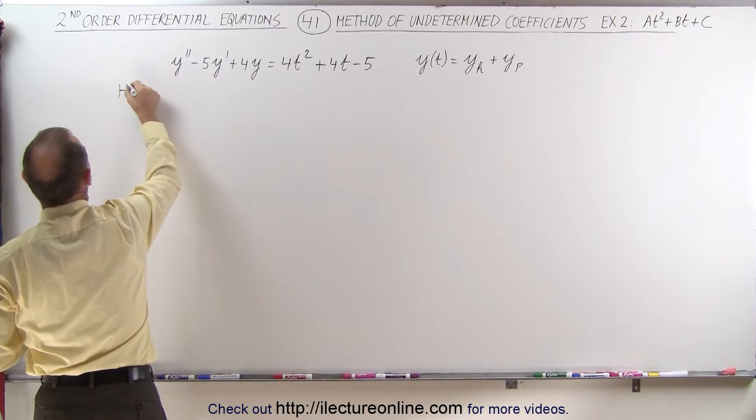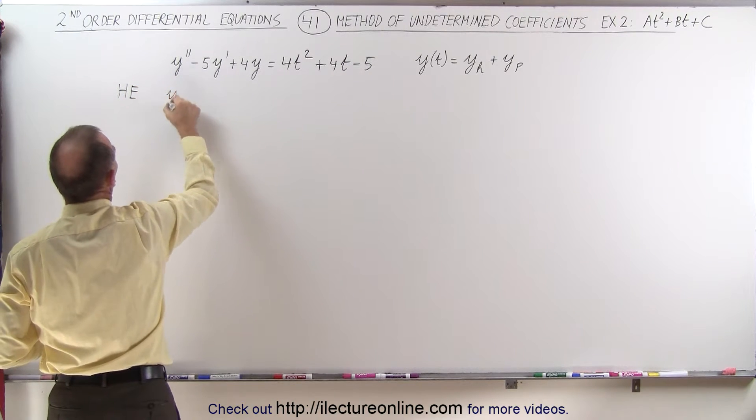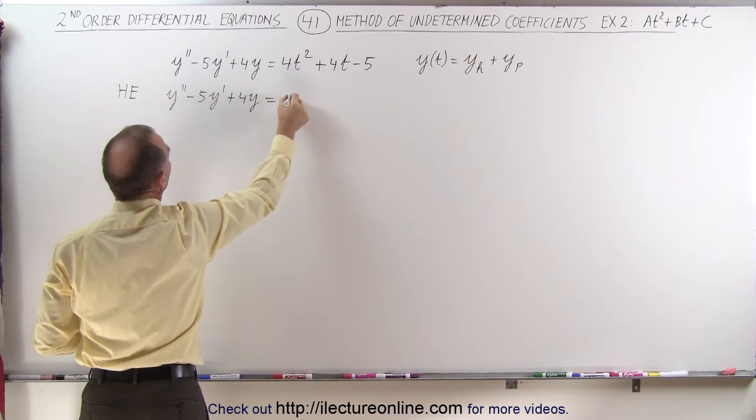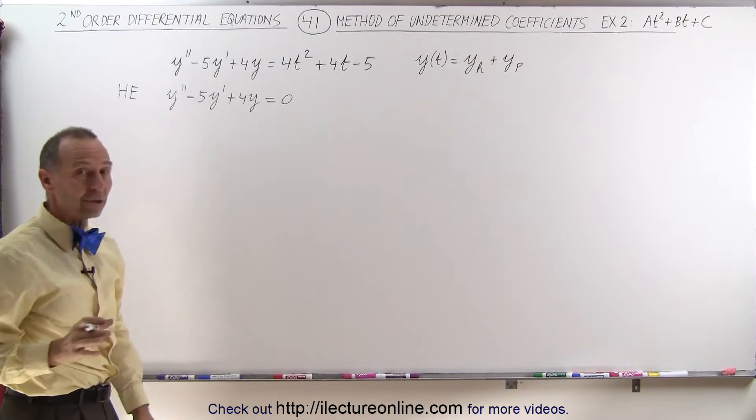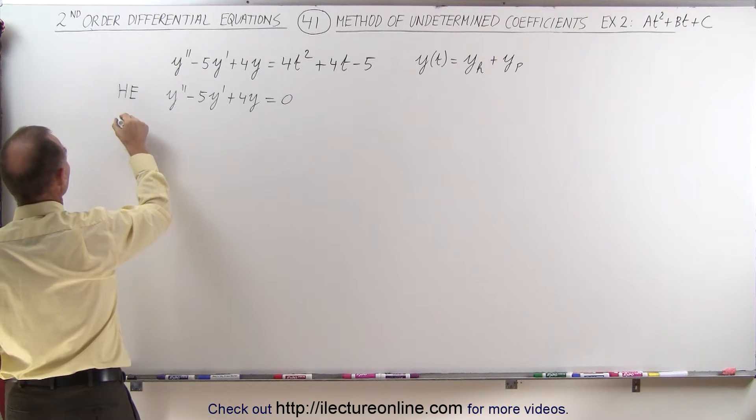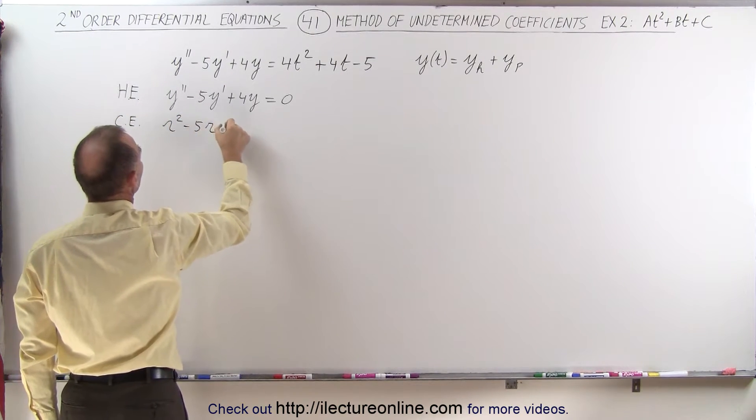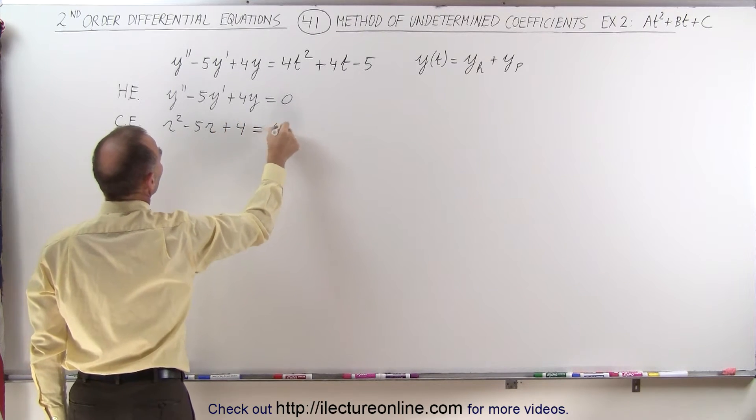The homogeneous equation will look as follows: y double prime minus 5y prime plus 4y equal to 0. And now we solve that using the characteristic equation.